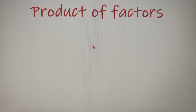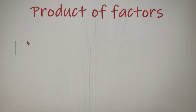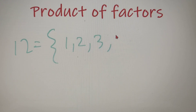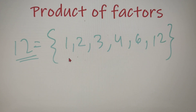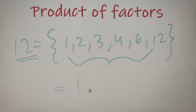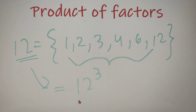The factors of a number are numbers which are less than or equal to it and which divide the given number. For example, if I have the number 12, then the factors of 12 are 1, 2, 3, 4, 6, and 12. All these six numbers are factors of 12 because all of them divide 12. Since we are more interested in calculating the product of factors, we simply multiply all these six numbers, which gives us the result as 12 to the power 3. So the product of factors of the number 12 is equal to 12 cubed.